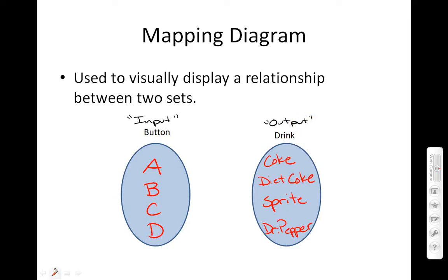So for example, if you pressed button A and you got a Coke, button B and you got a Diet Coke, button C and you got a Sprite, and button D and you got a Dr. Pepper, this mapping would show how all of the wires inside the Coke machine work. And it's showing the relationship between the buttons and the soft drink that you receive.